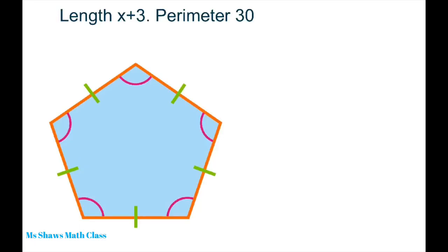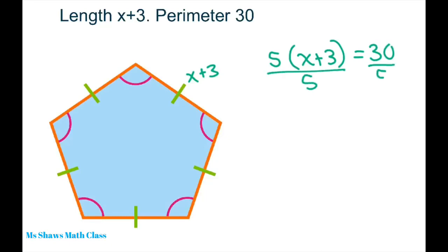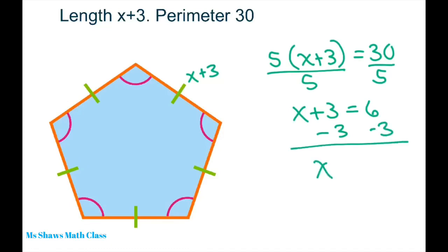Now we're going to go through this quickly. The length of each of these sides is X plus 3 and I notice this is a pentagon, so we have 5 equal sides. So 5 times X plus 3 equals 30. Divide both sides by 5 using the division property, then subtract 3 using the subtraction property, and you get X equals 3. So each of these sides is 6, and 5 times 6 is 30.